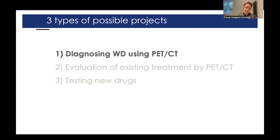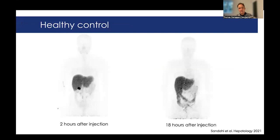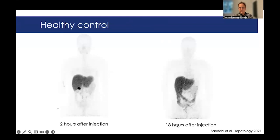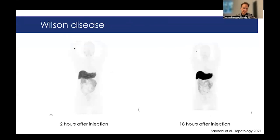Diagnosing Wilson disease using PET. This is a pure PET signal of a healthy volunteer. You can see two hours after an IV injection of copper, most of the copper has gone to the liver. We can see also a very nice little black spot here indicating exactly where the gallbladder is, and that of course is a proof of biliary excretion. And further, if you look at 18 hours after injection, you can see not only copper in the liver, but also the colon being quite visible here, indicating hepatobiliary excretion into the small intestine.